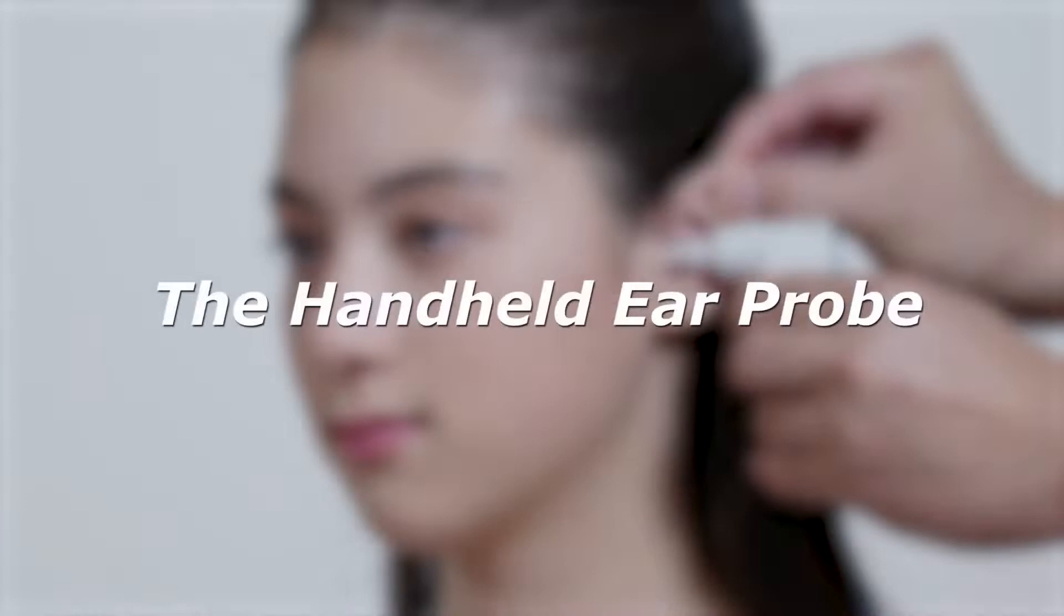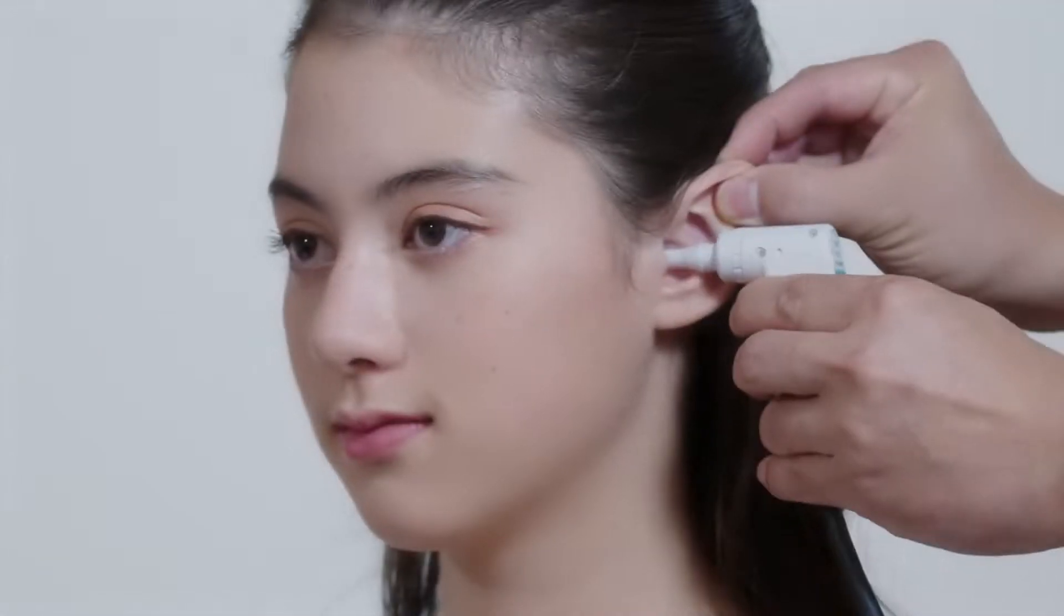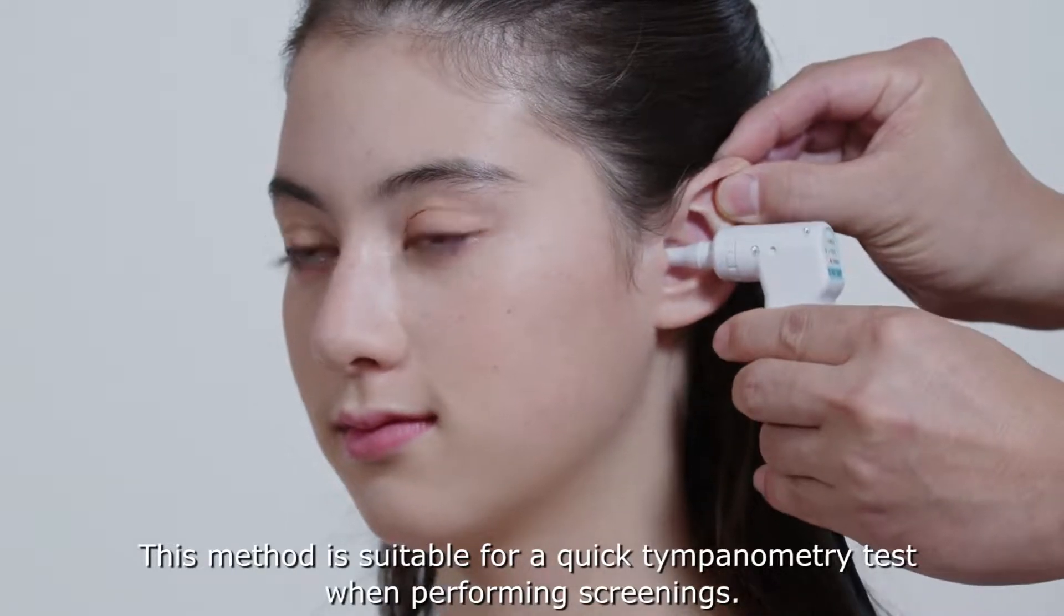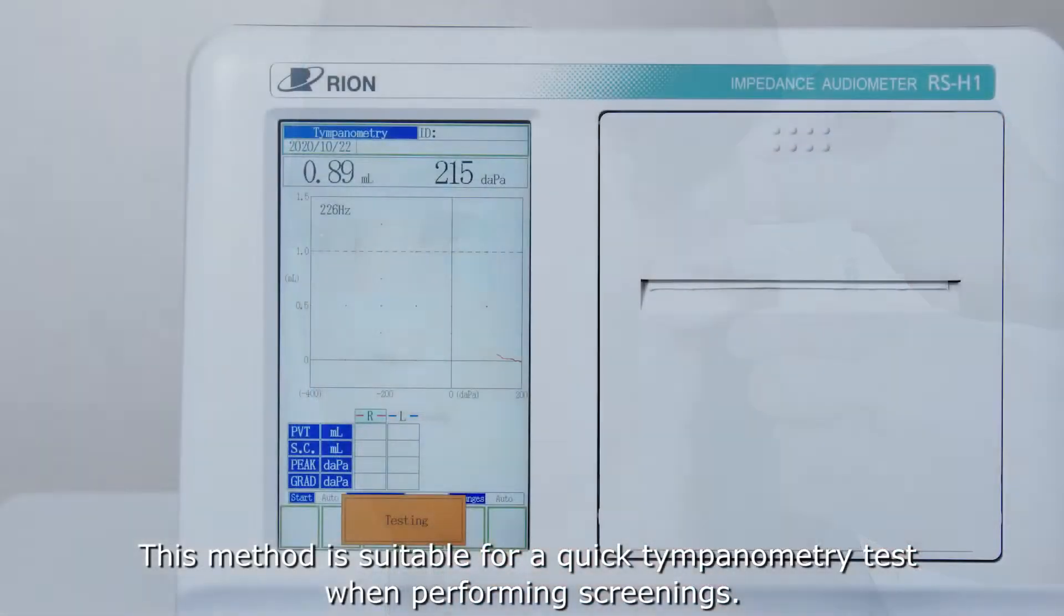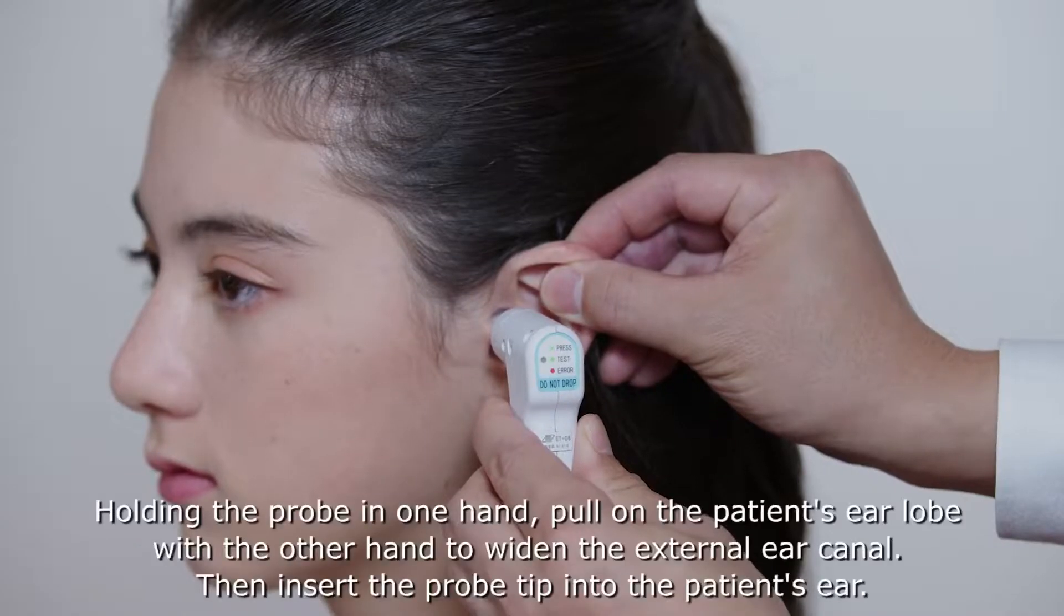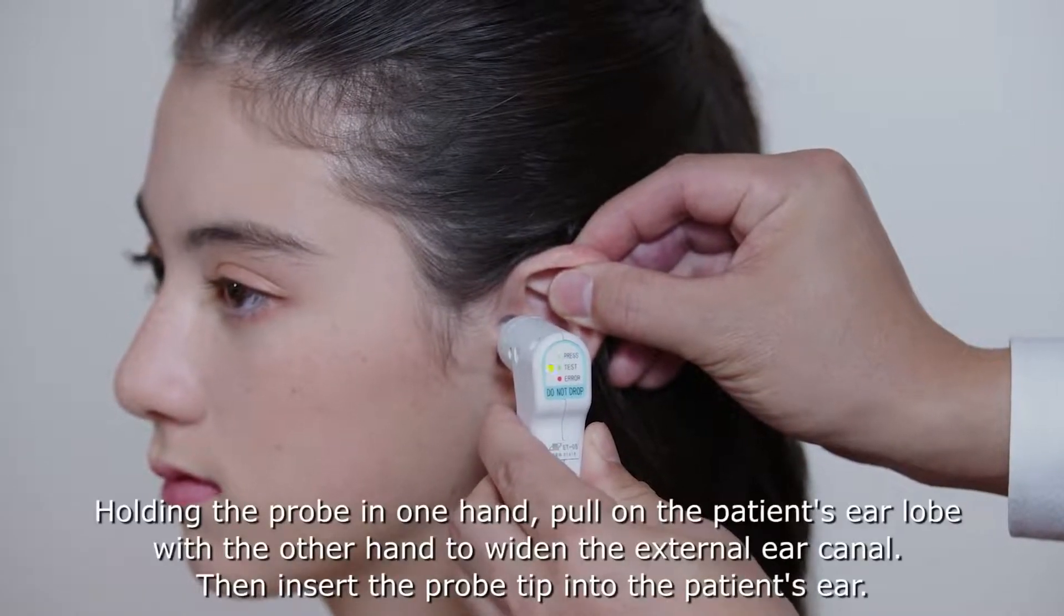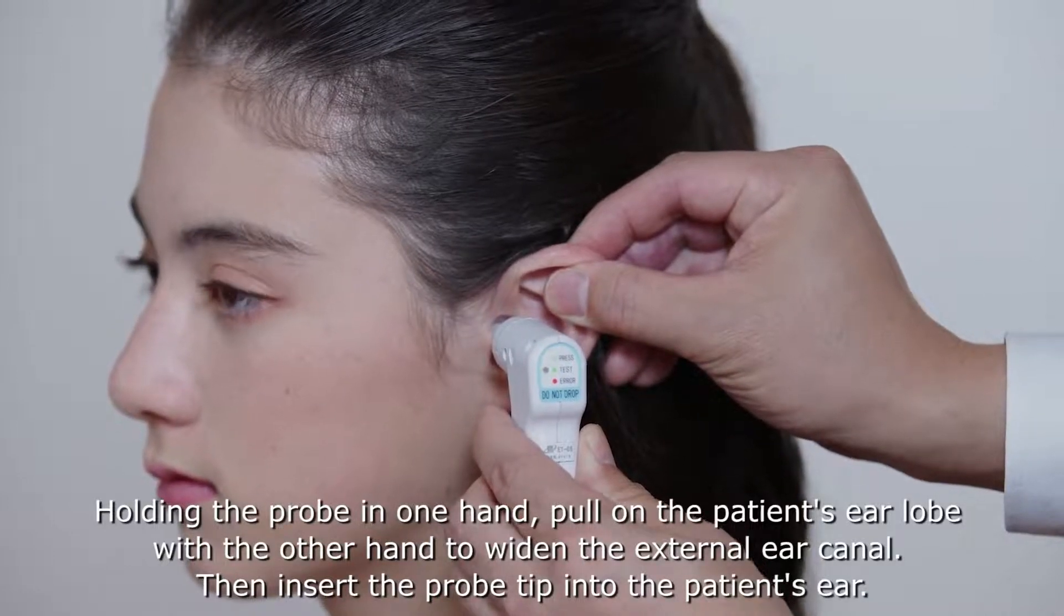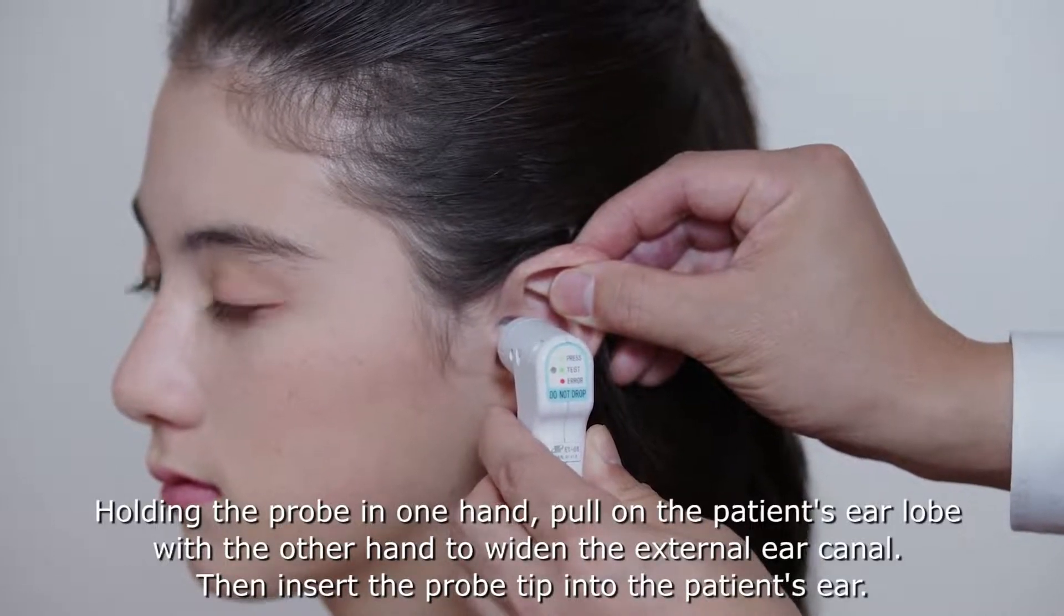The handheld ear probe. This method is suitable for a quick tympanometry test when performing screenings. The examiner should hold the probe as steady as possible, making sure it does not move. Holding the probe in one hand, pull on the patient's ear lobe with the other hand to widen the external ear canal. Then insert the probe tip into the patient's ear.